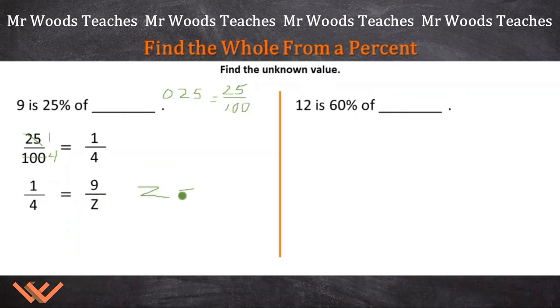is equal to, and then 4 times 9, 36. And that's it. That's all we need to do. We can prove it, because we can say 36 divided by 9, and 9 times 4 is equal to 36.